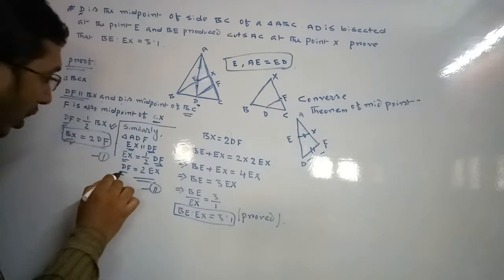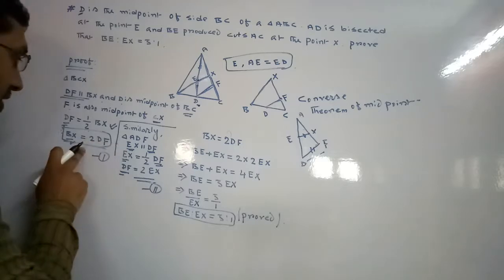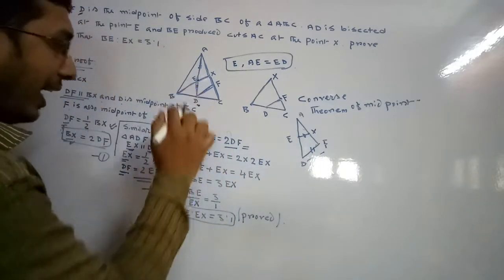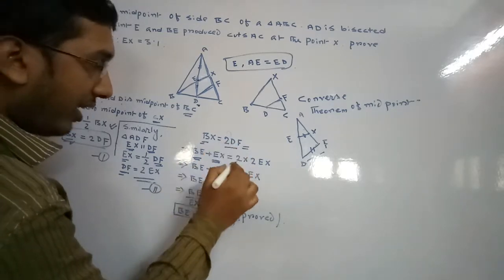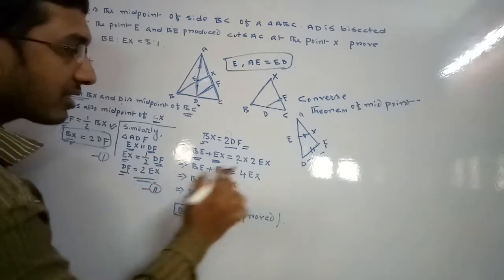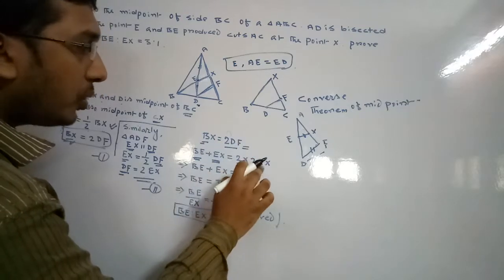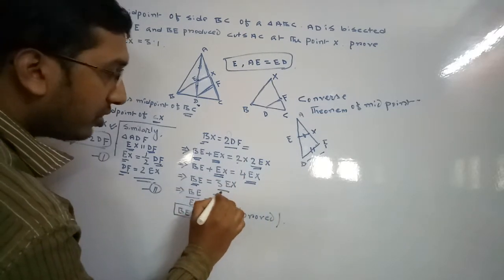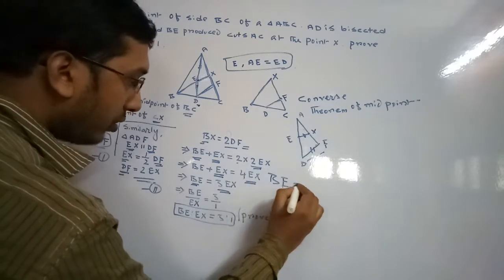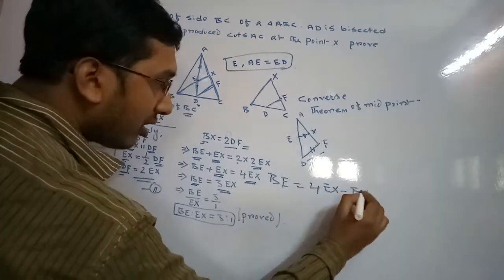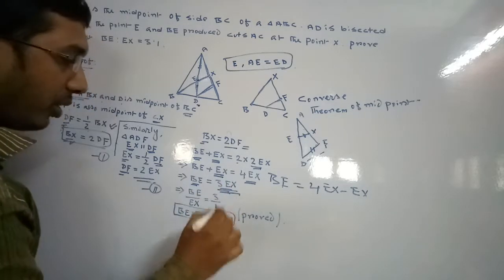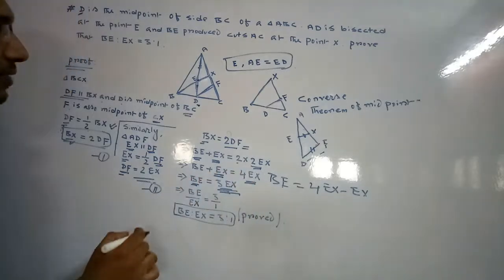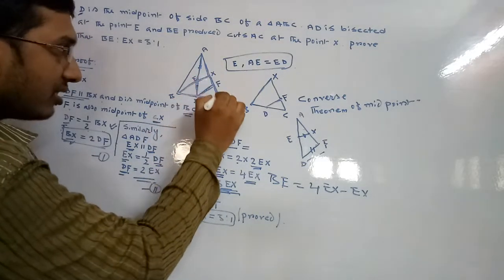Now substitute the value of DF from the second condition into the first equation. The first equation is BX equals 2DF. We can write BX as BE plus EX. Substituting DF equals 2EX gives BE plus EX equals 2 times 2EX equals 4EX. Therefore BE equals 4EX minus EX equals 3EX, which means BE by EX equals 3 by 1.